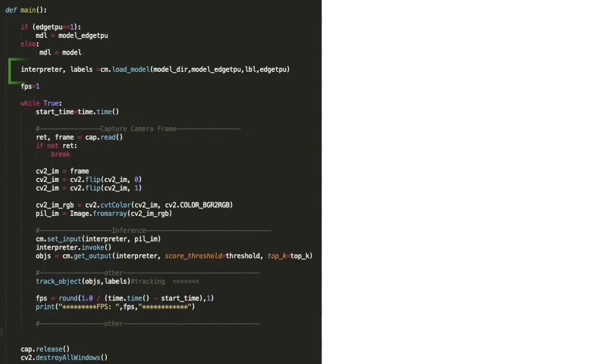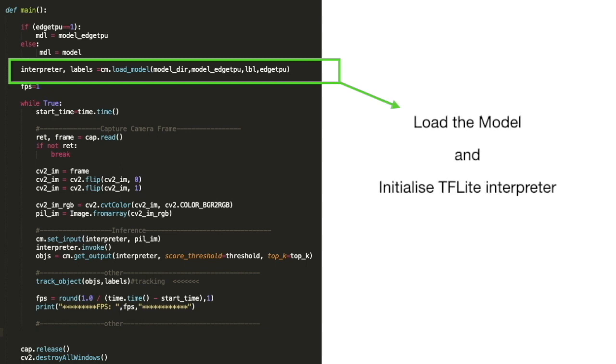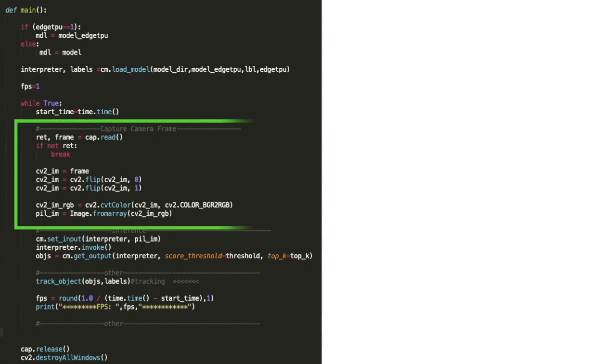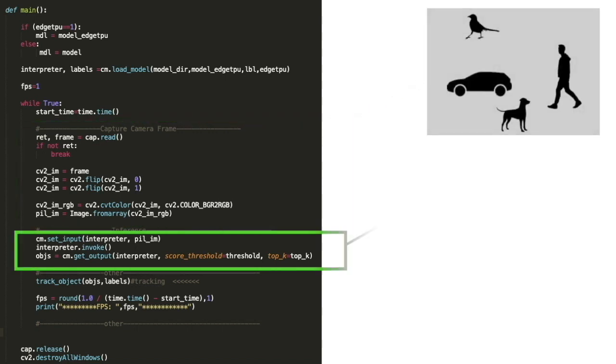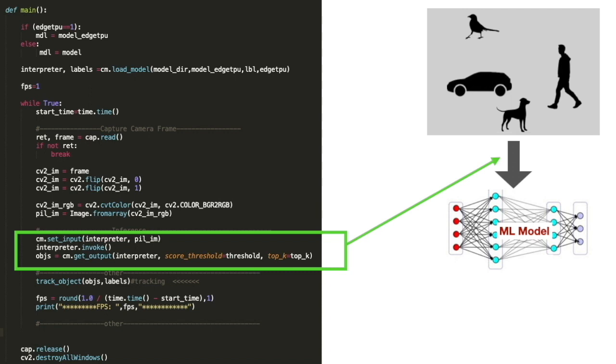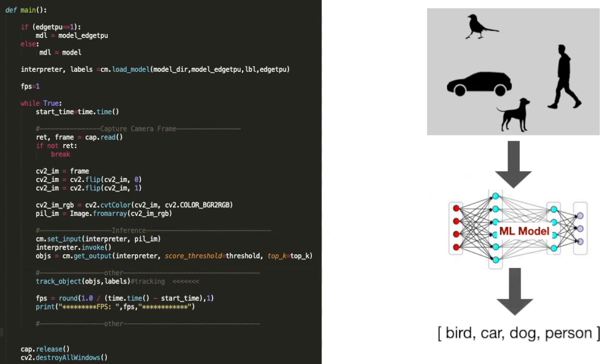The main function begins with initializing the interpreter and loading the ML model. Then, inside a loop, robot's camera captures frames and feeds them to the ML model to perform inference. The model provides the list of objects present in the frame. This list is passed to the tracking function as a parameter.